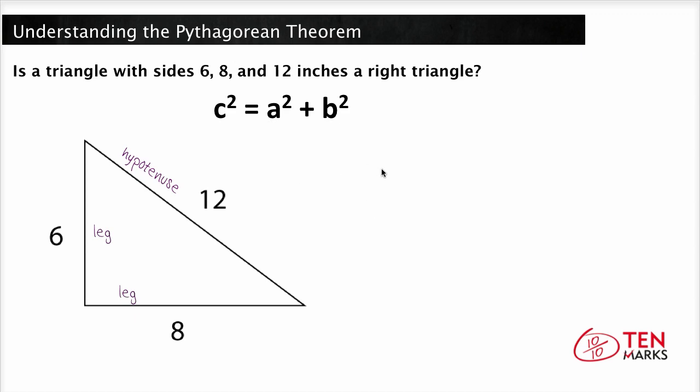So let's fill in the Pythagorean Theorem with the proper values. 12 squared equals 6 squared plus 8 squared. So when we find the square of each of these numbers, we get 144 equals 36 plus 64. Then when you add 36 to 64, we actually end up with 100.